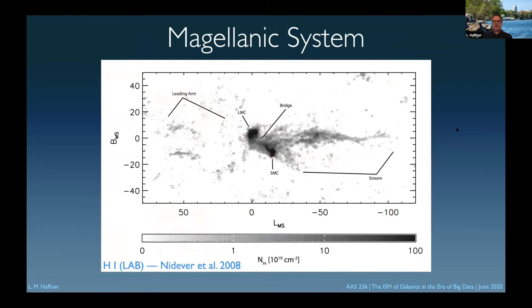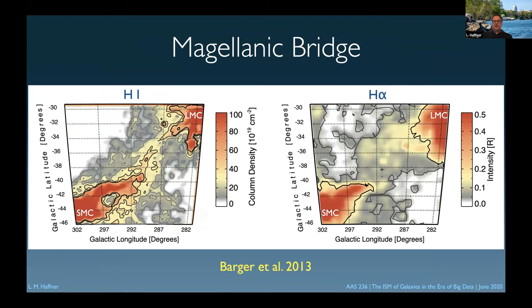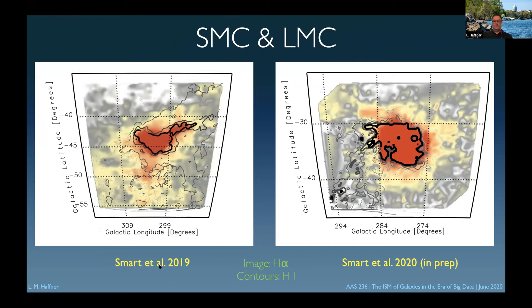We did a lot of work on high velocity clouds when we had WHAM in the north; now we have WHAM in Chile in the south and have access to the large Magellanic system with lots of anomalous velocity gas. The first set of work was done by Kat Barger, showing that the ionized component between the LMC and SMC — the Magellanic Bridge — has an ionized component that matches the neutral component. With the galaxies themselves, we've seen a very extended amount of ionized gas. This is work of Brianna Smart for her thesis — showing extended ionized gas outside the H1 contours of the LMC. This region leads into the Magellanic Stream, and Brianna has a large amount of data doing a survey of the Magellanic Stream that she's still working to reduce.